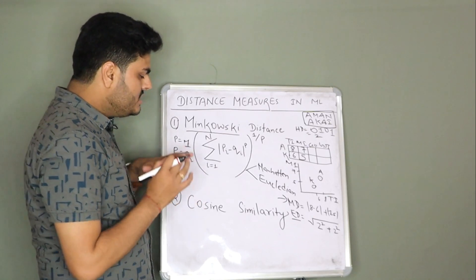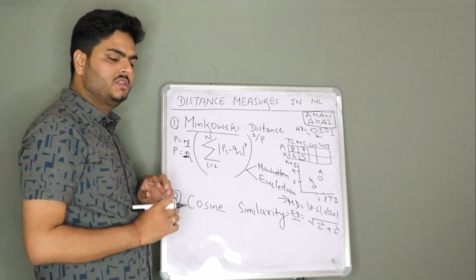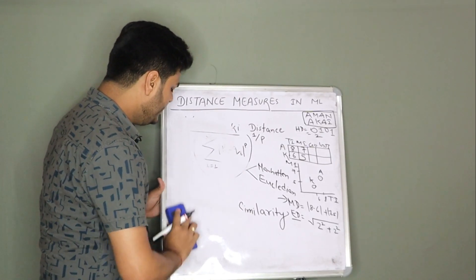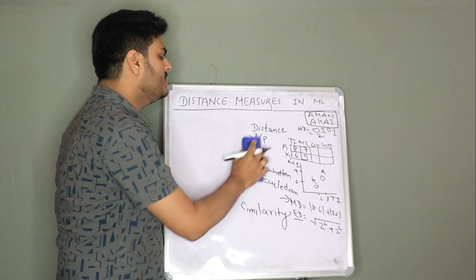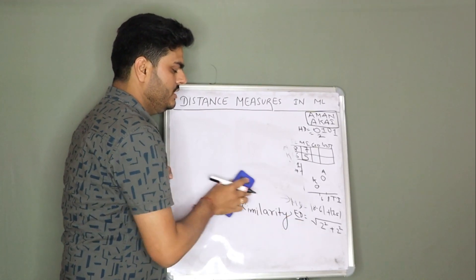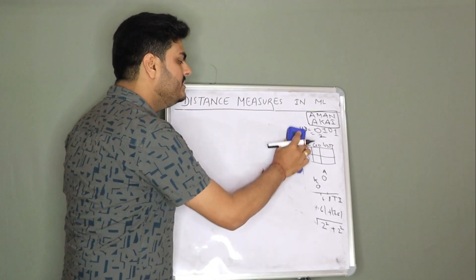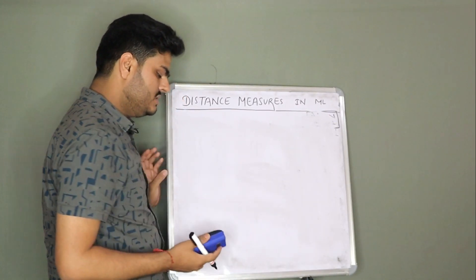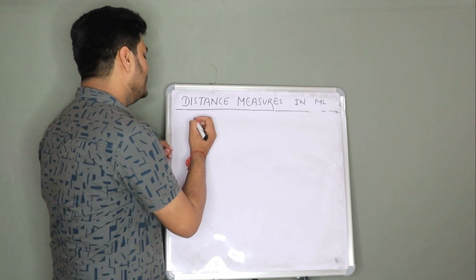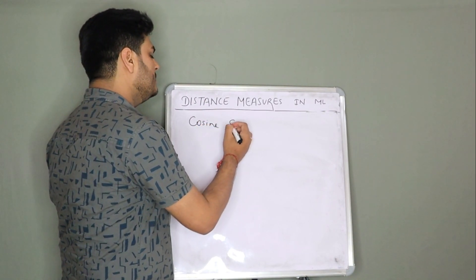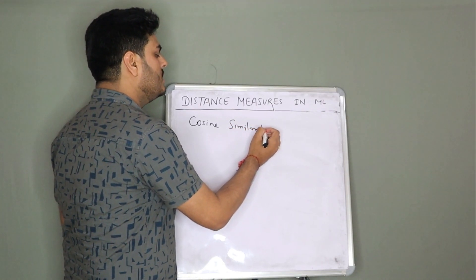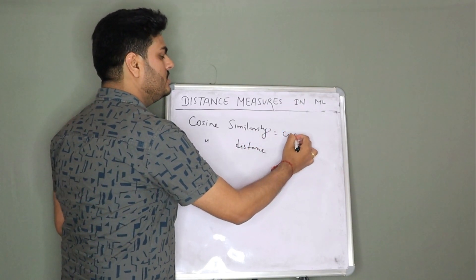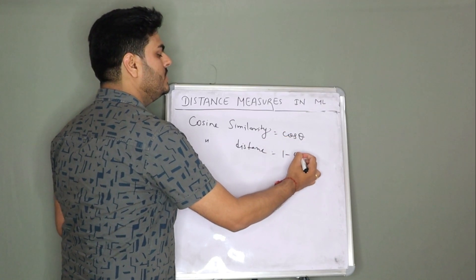Now we will cover what is cosine similarity and what is cosine distance in detail. For knowing that, I want you to do a little revision — think about what you learned about cos theta in trigonometry. I am sure all of you would have read trigonometry in school. So how cosine distance is calculated — there are two things: one is known as cosine similarity and the other is known as cosine distance. Cosine similarity is nothing but cos theta, and cosine distance is nothing but 1 minus cos theta.